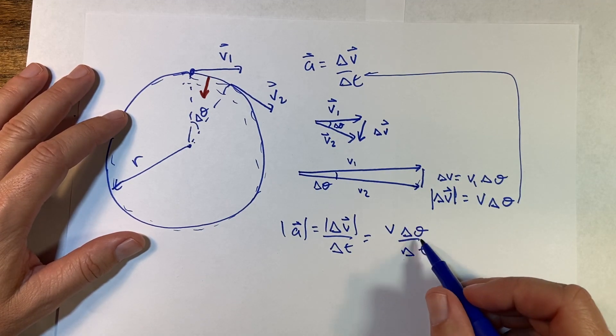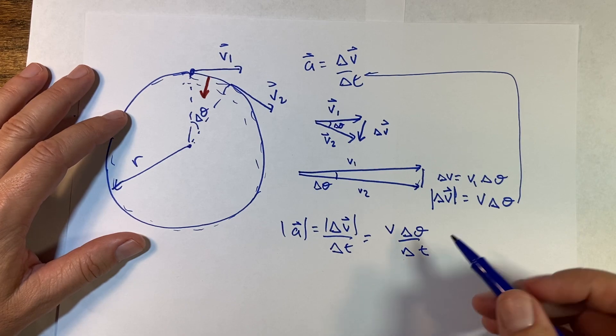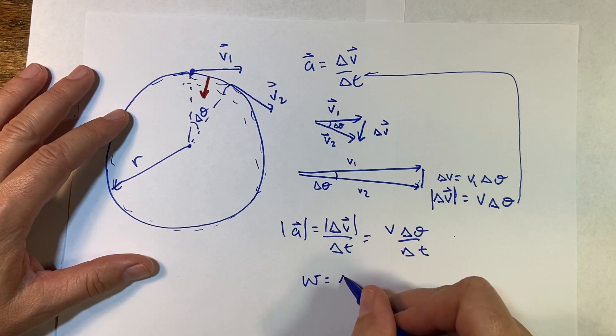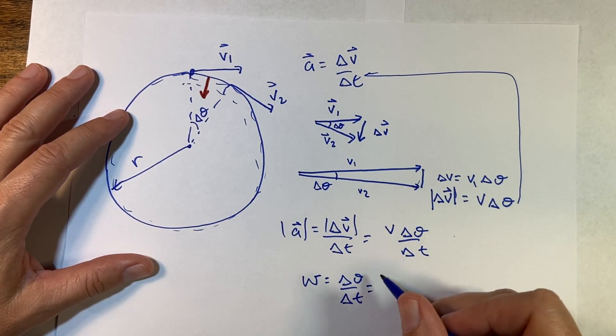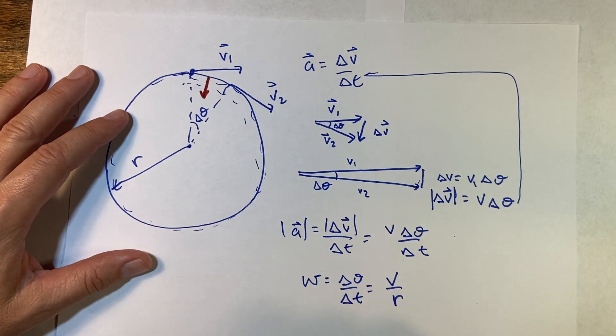So now there's a couple options that I can move forward here. This is the change in theta with respect to time, so this can also be defined as the angular velocity, omega, as the change in theta over the change in time. And that's also equal to the linear velocity divided by the radius, which I didn't derive, but this comes up a lot. I think it's okay to use.